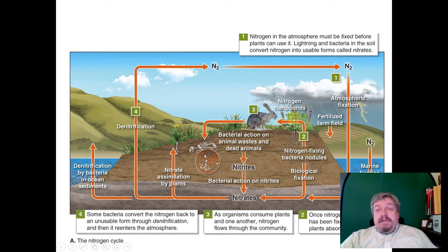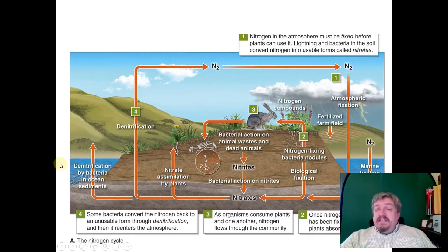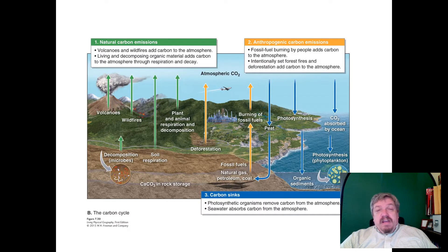Plants take up the nitrogen from fertilizer, which becomes part of the plants' cells, and then animals eat those plants. The big takeaway is that nitrogen moves in various ways and various states of matter through the biosphere.